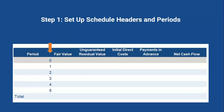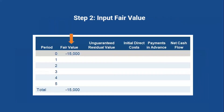The schedule headers include: fair value, unguaranteed residual value, initial direct costs by the lessor, and payments in advance — all the cash flows we'll use to arrive at the net cash flow. We then use that net cash flow to calculate the implicit rate via Excel's IRR function. The fair value of the asset at the beginning of the lease is $15,000, entered in period zero as a negative value, because from the lessor's perspective this is a cash outflow — they're essentially transferring that value to the lessee.